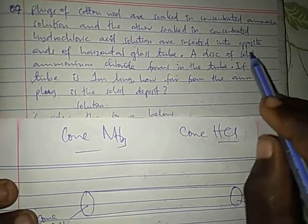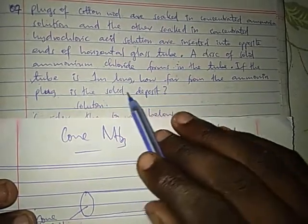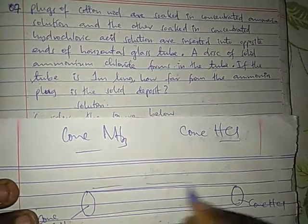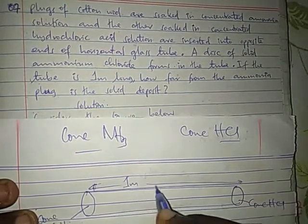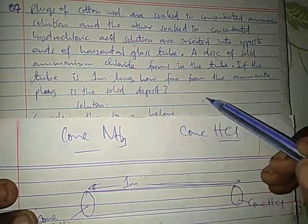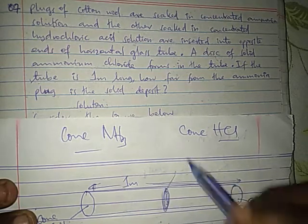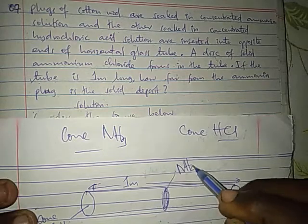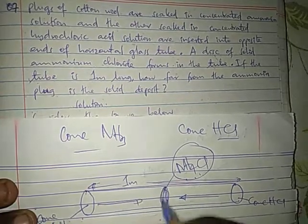Then it says a disk of solid ammonium chloride forms in the tube. If the tube is 1 meter long, a disk of solid ammonium chloride forms in the tube. So here we have formed a disk of ammonium chloride, NH4Cl. This comes from the reaction of gas coming from here and gas coming from here. The gases meet here.